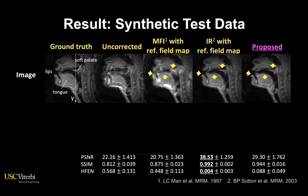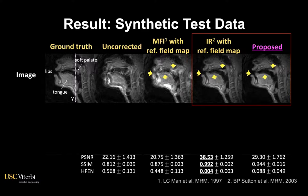We apply different existing methods to this test data. The proposed CNN method successfully resolves the blurring artifact in most regions and achieves visually comparable results to an ideal reconstruction method based on the ground truth field map.